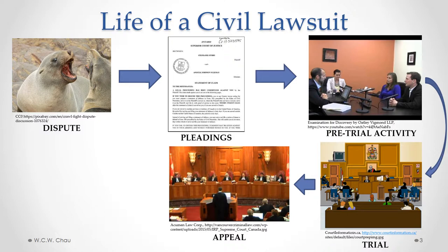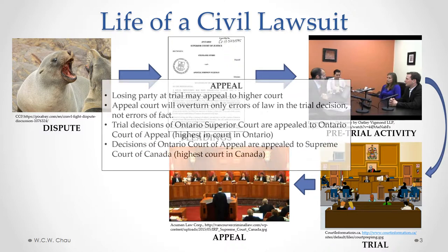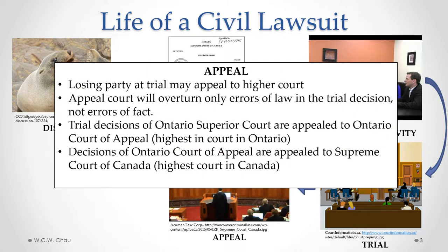After a decision at trial, the next stage is an appeal. The losing party at trial will appeal, or at least try to appeal, that decision to a higher court — essentially saying there was an error in how that court applied or interpreted the law. An appeal court will overturn errors of law but will not address errors of fact. A trial decision of the Ontario Superior Court is appealed to the Ontario Court of Appeal, which is the highest court in Ontario. Decisions of the Ontario Court of Appeal are appealed to the Supreme Court of Canada, which is the highest court in Canada.